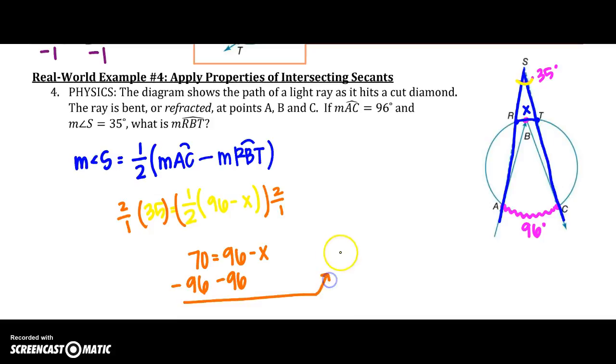When I subtract 96 from both sides, I see I have a negative number, so negative 26 equals negative X. So I need to divide by negative 1 to get that to cancel. So my arc is going to be 26 degrees.